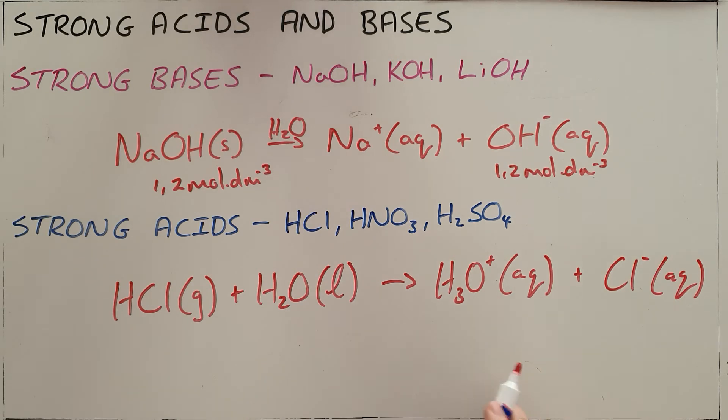So when we say that it is a strong acid, what we are saying is that all of the acid dissociates and then ionises to become hydronium. So once again the entire concentration of the acid that you start with becomes the concentration of hydronium.